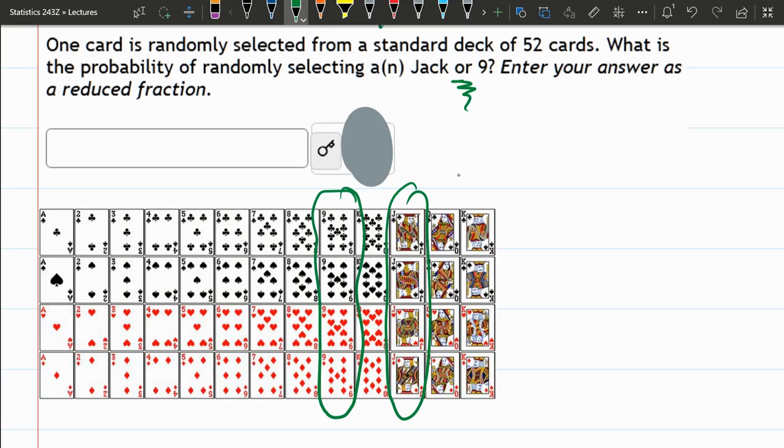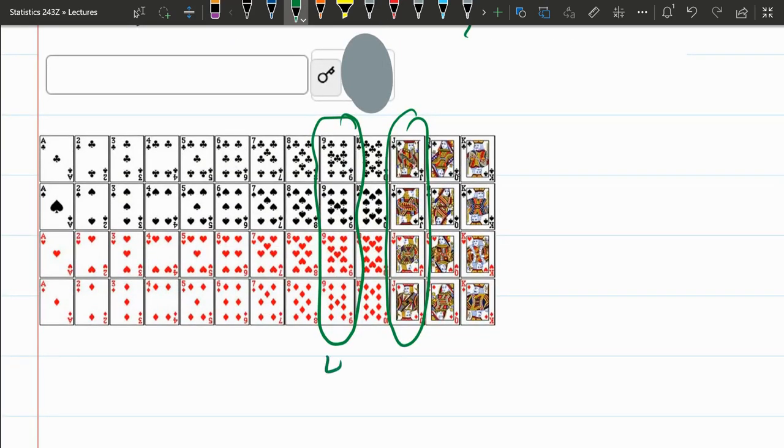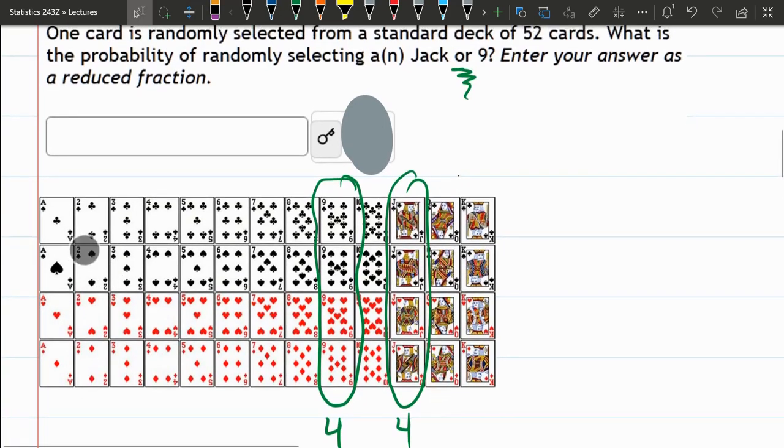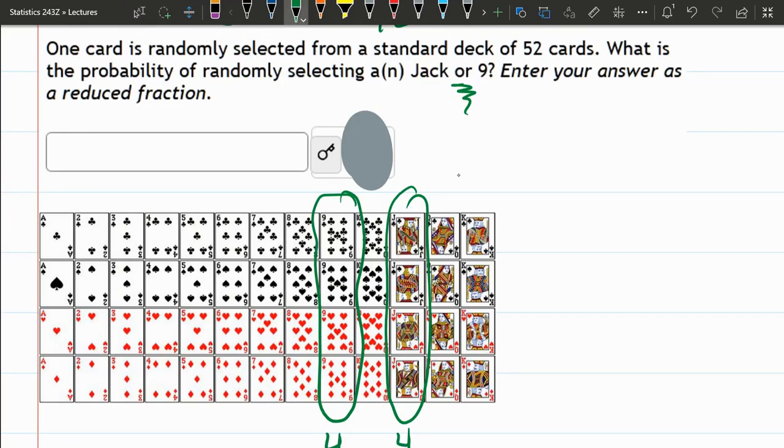Are these mutually exclusive? If I pick up a jack, could I also pick up a 9? You're only selecting 1 card. So you cannot select 1 card and get a jack and a 9. So you can only get a jack or a 9. They're mutually exclusive.